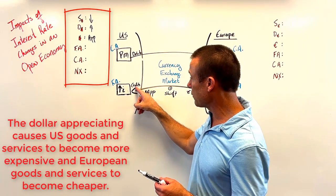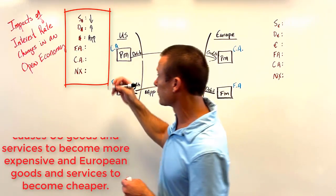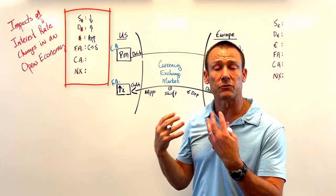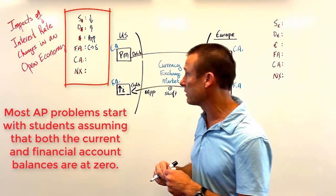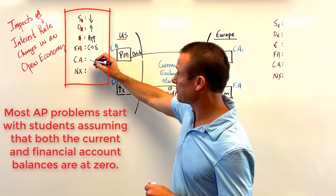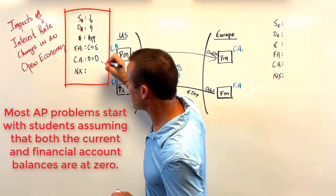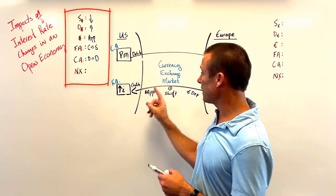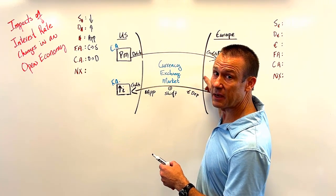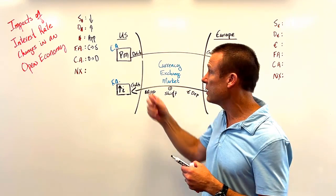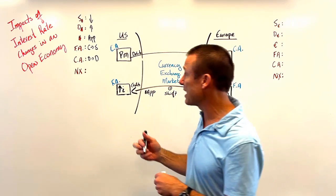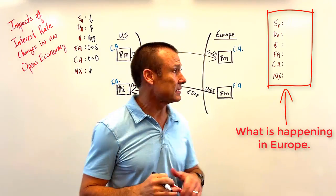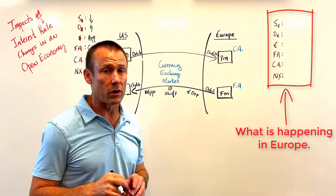Reading the model: we're getting credits in the financial account, and credits lead to surpluses — so the U.S. financial account moves toward surplus. I've got debits in the current account, and debits lead to deficits. Money is flowing out as the dollar appreciated — imports are going up in America because this stuff became cheaper. Exports are going down because U.S. goods became more expensive for Europeans. That means net exports are going down in the United States.